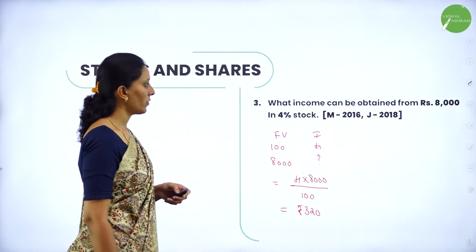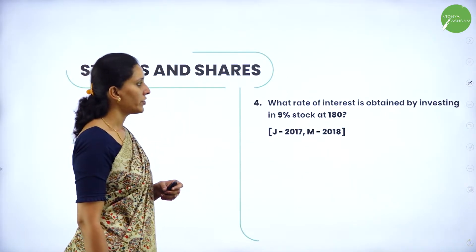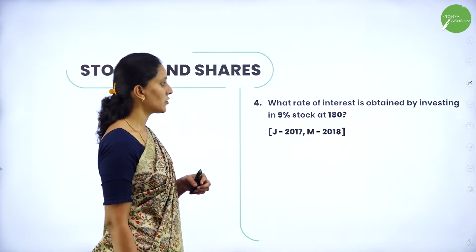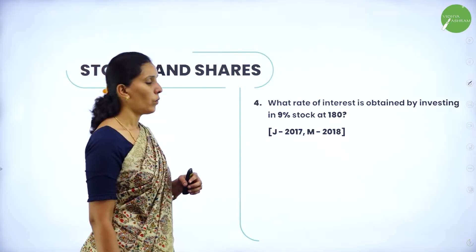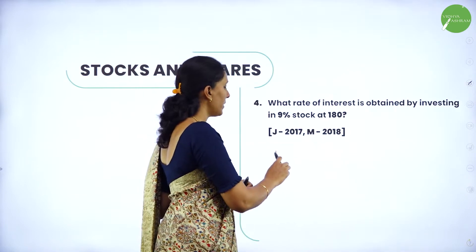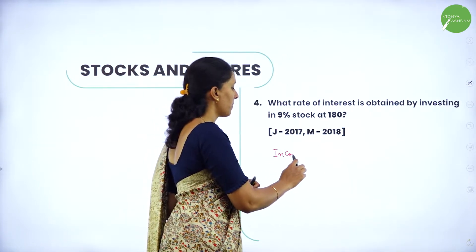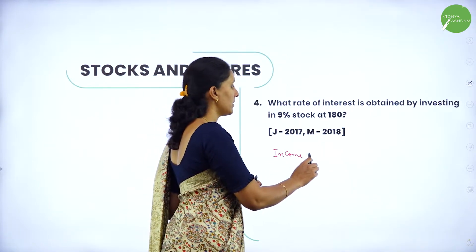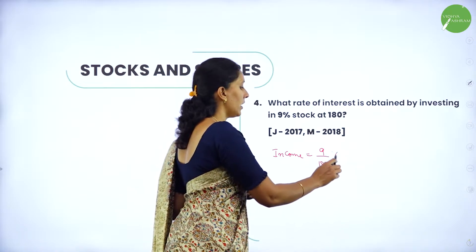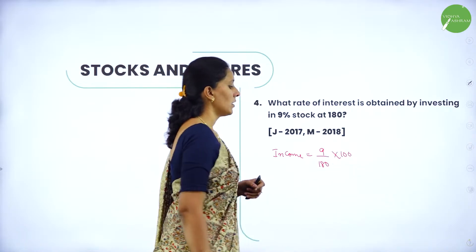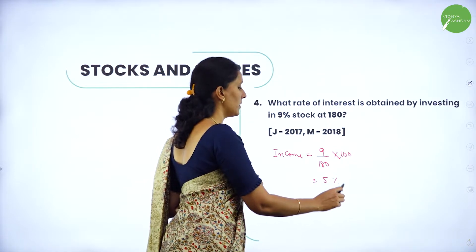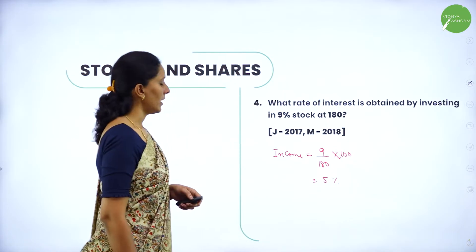Next question: what rate of interest is obtained by investing in 9% stock at 180? Income = 9/180 × 100, which equals 5%.